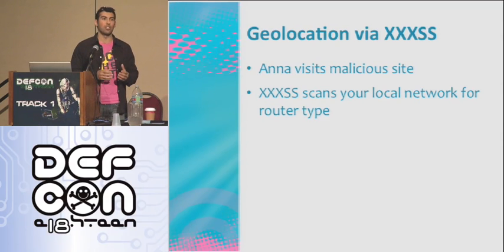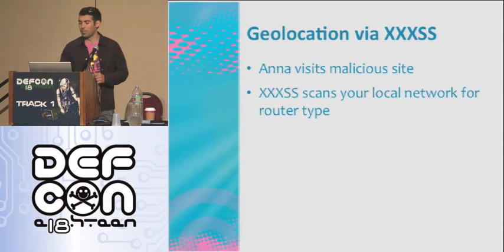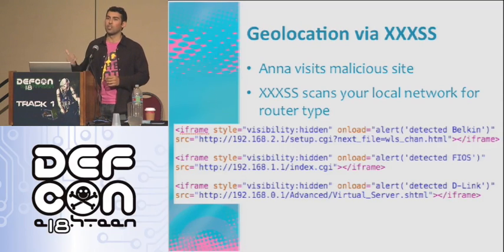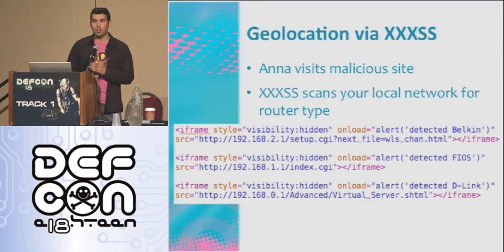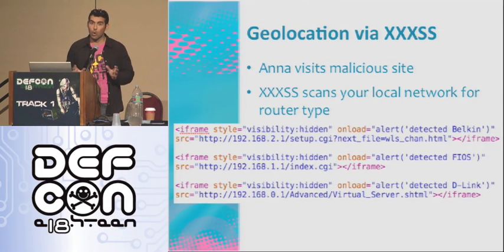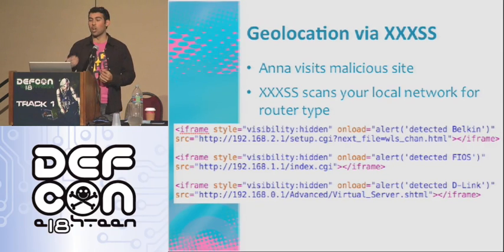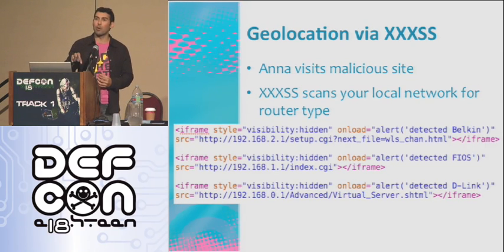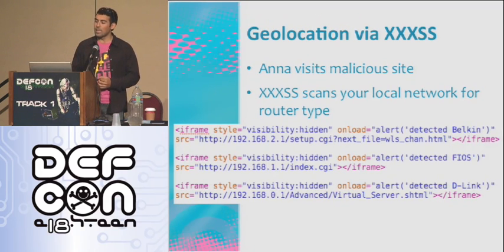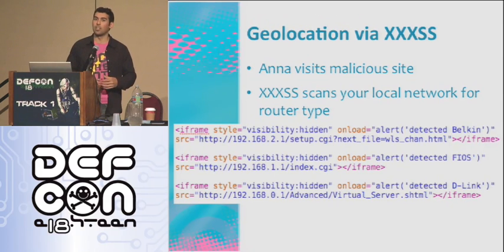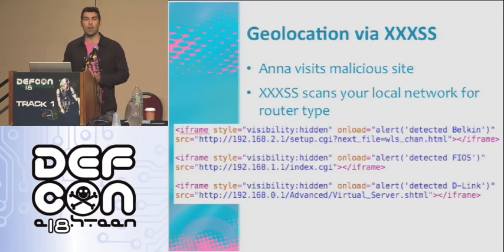To figure out what kind of router she's running on the local network, here's one example — there are a million ways to do it. Basically, I have iframes on a bunch of different URLs that are known router locations on your local network. I can't access that, but because her browser is on my site, it's now her network that's accessing it. She's accessing 192.168 addresses, and if any of those addresses work, an onload occurs that says 'I've detected a Vulcan router' or 'I've detected a Verizon Fios router' — and now we know what kind of router she's on.